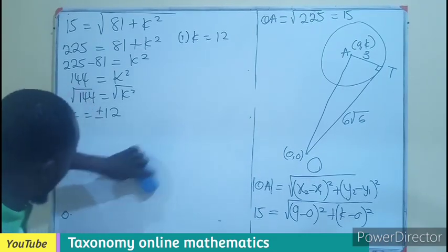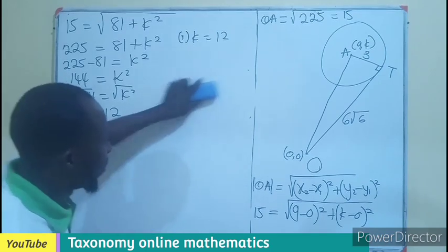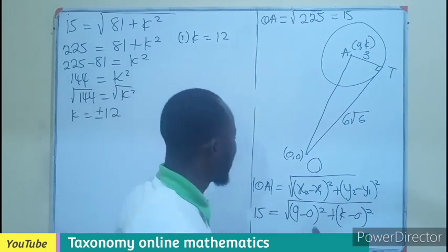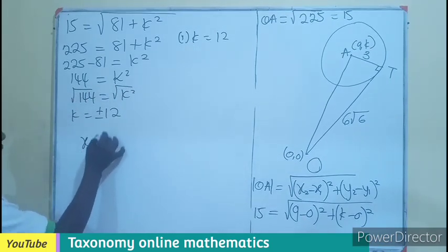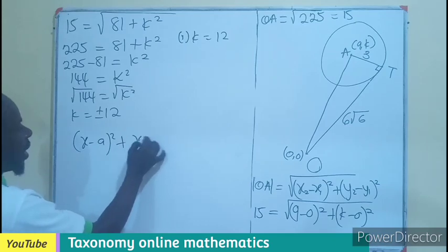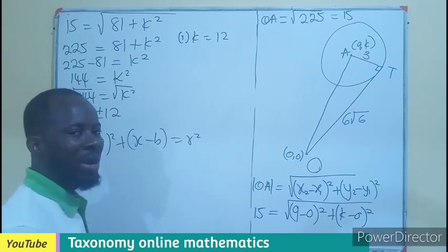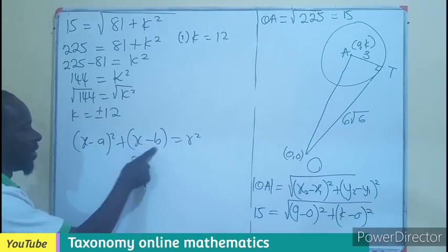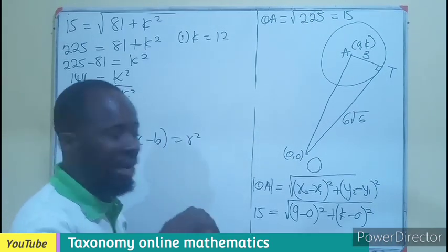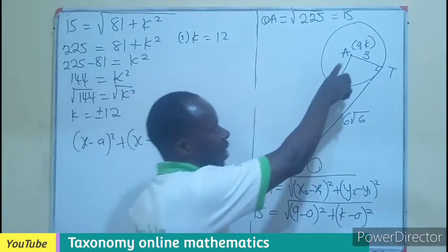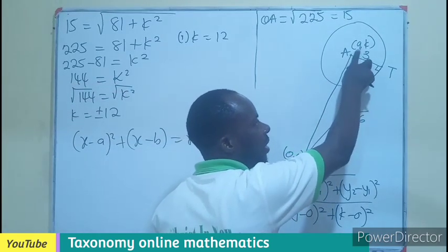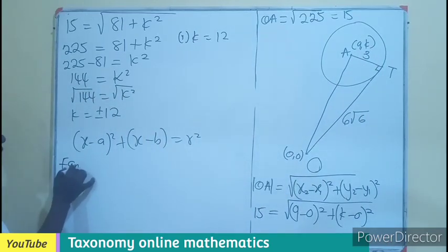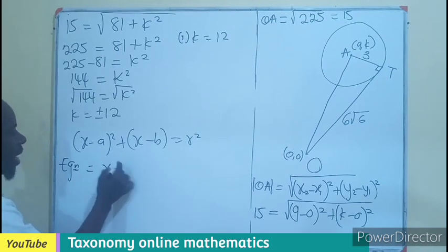Now, to find the equation, we know in finding the equation of a circle, if we are asked to find the equation of a circle, we know it is X minus A squared, Y minus B squared equals to R squared, where the R is the radius. In this case, you'll be giving us 3. The A and B is the center of the circle. So it means 9 and 12 will replace this.